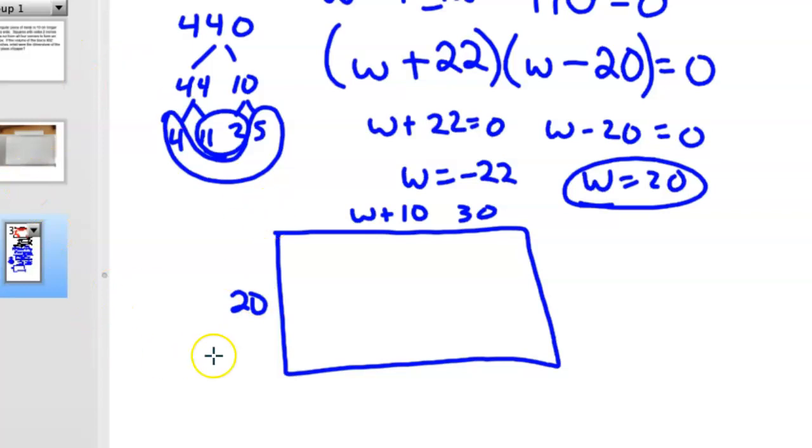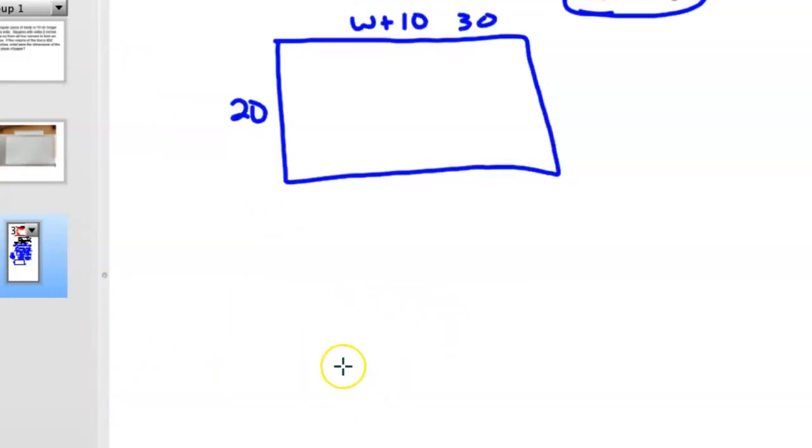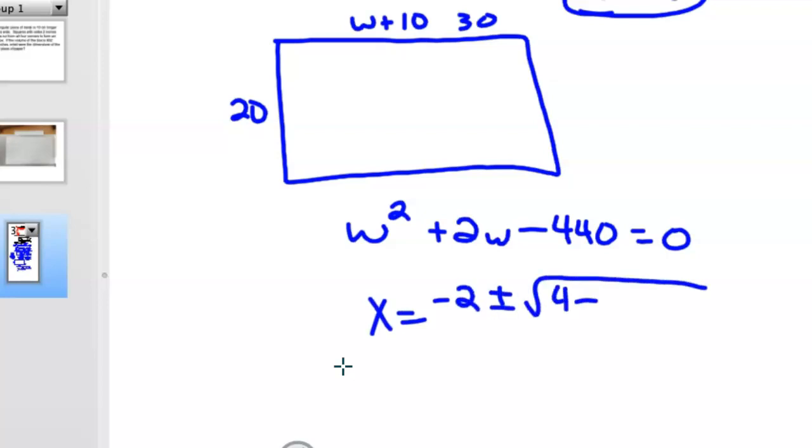Now, I also said you could use quadratic formula, which is fine too. You had, it was the original equation, W squared plus 2W minus 440 equals 0, so x equals negative 2 plus or minus the square root of 4 minus 4 times 1 times negative 440, all divided by 2. And if you take that out, you'll get your two answers, 20 and negative 22 again. And again, we're just looking at the positive one. So the original rectangular piece is 20 by 30. Hope this helps, and I hope it worked.